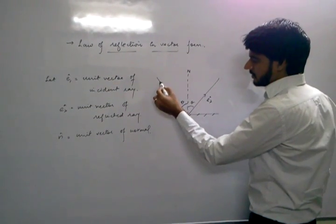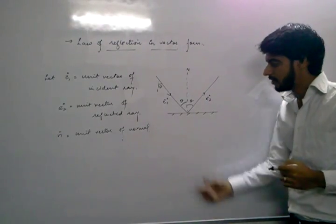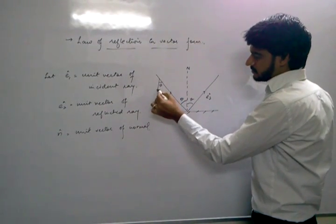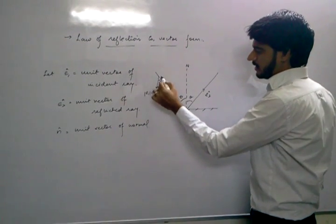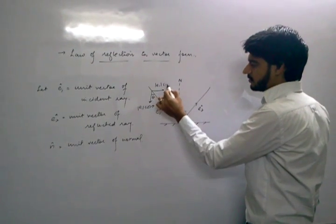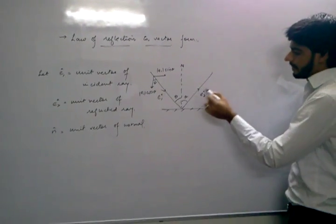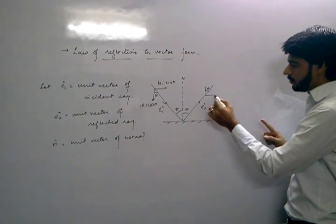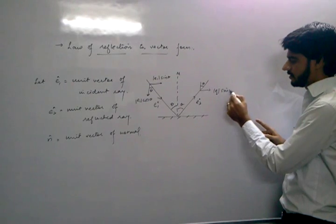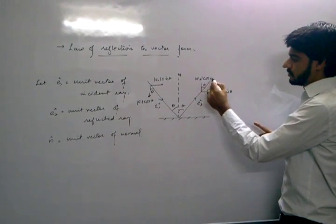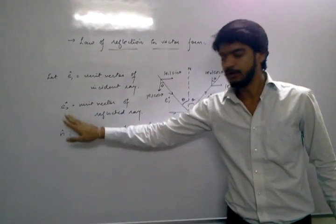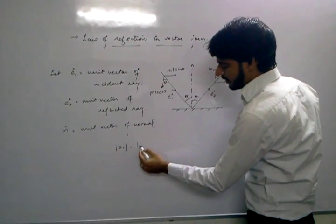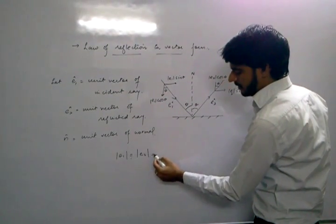If this angle is theta, then this angle will also be equal to theta. Now, resolving unit vector E1 in two directions: this component will be the magnitude of E1 into cos theta, and this will be the magnitude of E1 into sin theta. Similarly, if we resolve E2 into two parts, this angle will be theta — this component will be magnitude of E2 into sin theta, and this will be magnitude of E2 into cos theta. Since E1 and E2 are unit vectors, their magnitudes equal 1, so magnitude of E1 equals magnitude of E2 equals 1.